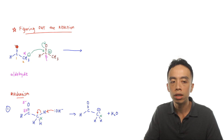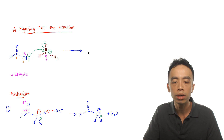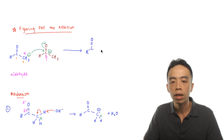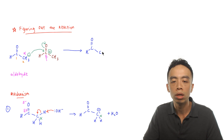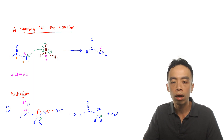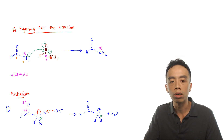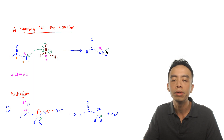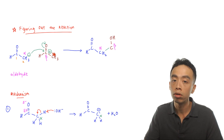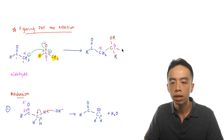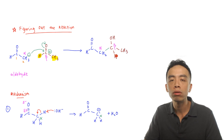To draw the product, it is easier to draw the aldehyde end first: a CH with a C=O group, then the alpha carbon — which has lost a H⁺ so CH₃ becomes CH₂. The alpha carbon joins to the beta carbon (shown in green). The beta carbon now carries an OH group, and is also bonded to a hydrogen and a methyl group. This is the product when ethanal undergoes aldol addition reaction.